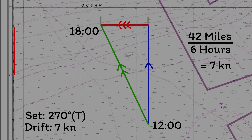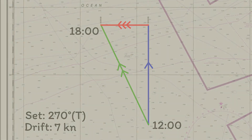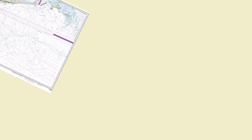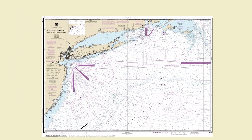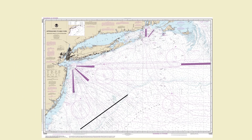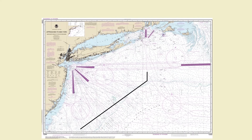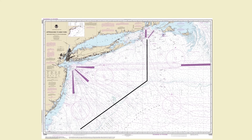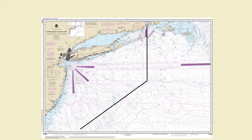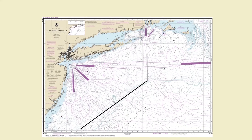So we've seen how you can find the tide if you know your water track and your ground track. But what about the other way around? Say you've plotted the track that you want to follow — you've plotted your ground track — but you want to know the course that you are going to steer to keep your vessel on that ground track. Basically, you want to know what your water track needs to be.